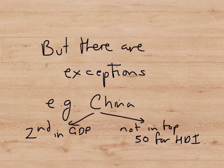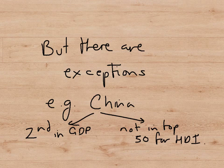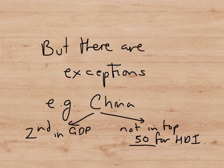However, there are one or two exceptions to this rule, and China is a notable example. China is second in the ranking of GDP countries — it has the second highest GDP in the world — but it's not even in the top 50 when its HDI is calculated. So we could argue that China is an economy that produces a lot of output, but where the welfare of its population is relatively low compared to other countries. This shows that there can be differences in measurement between GDP and HDI, and that in some cases, HDI is probably a better measure of welfare.